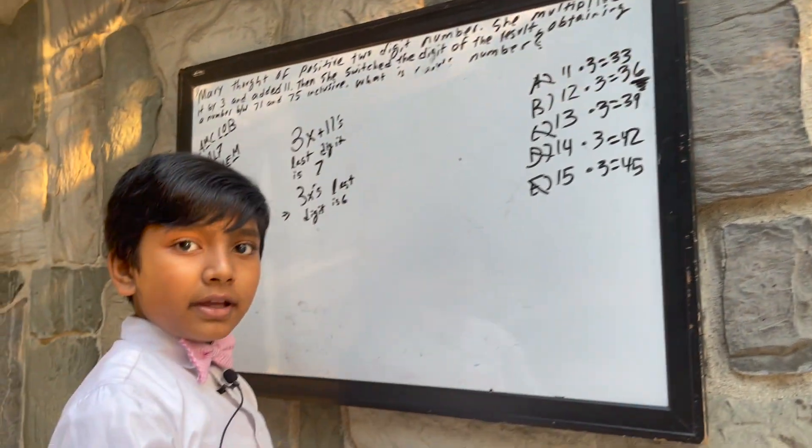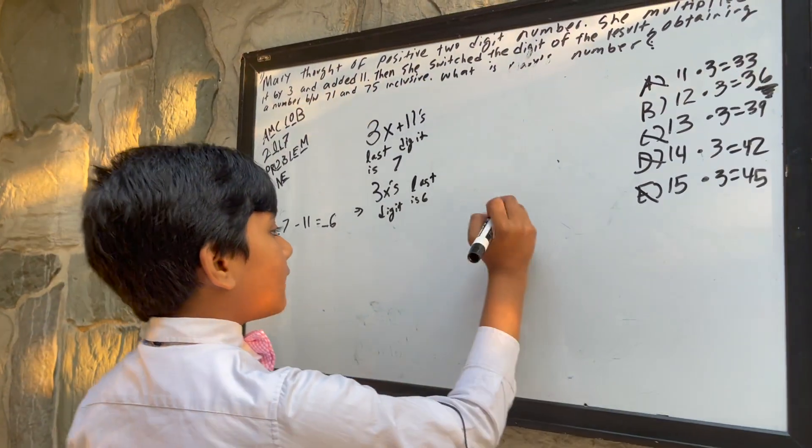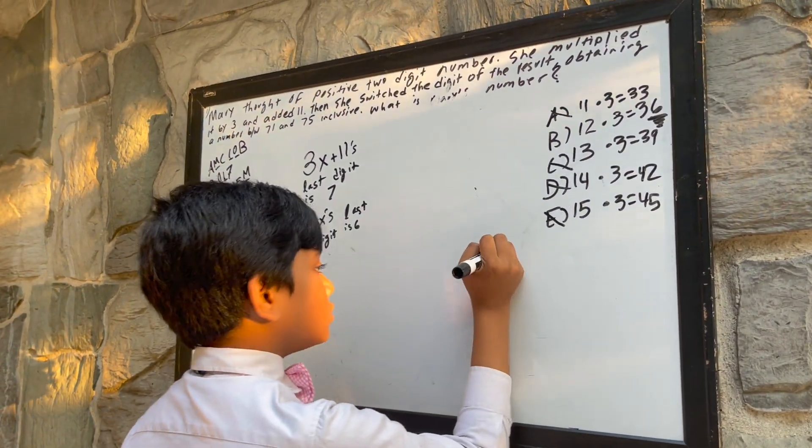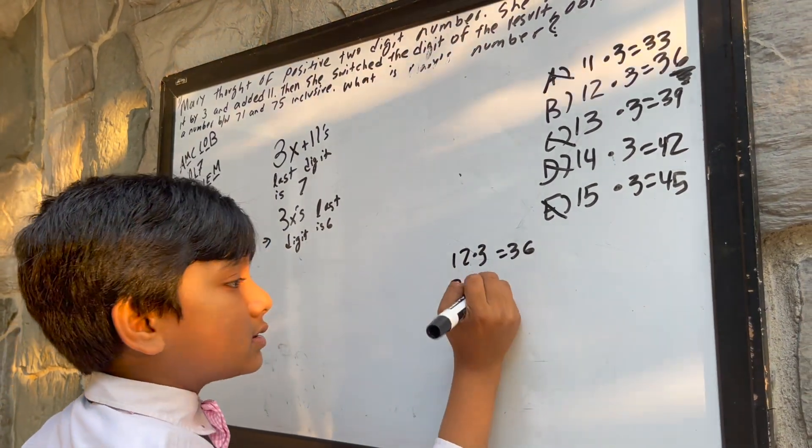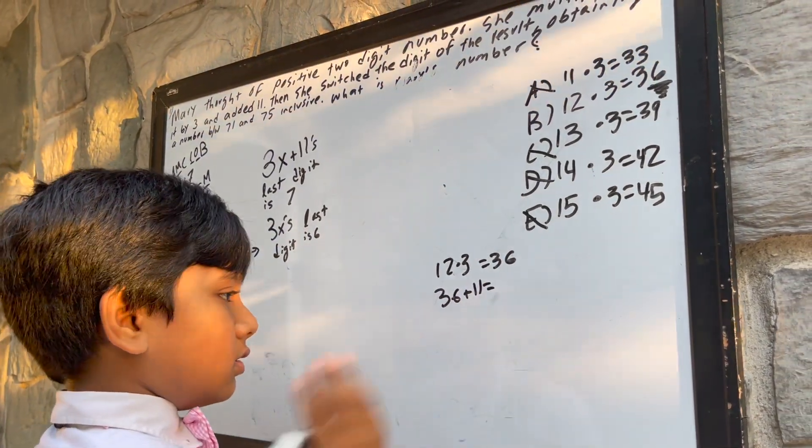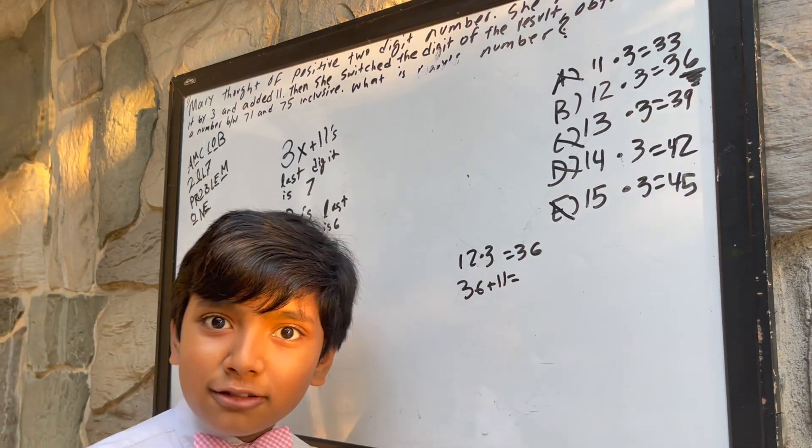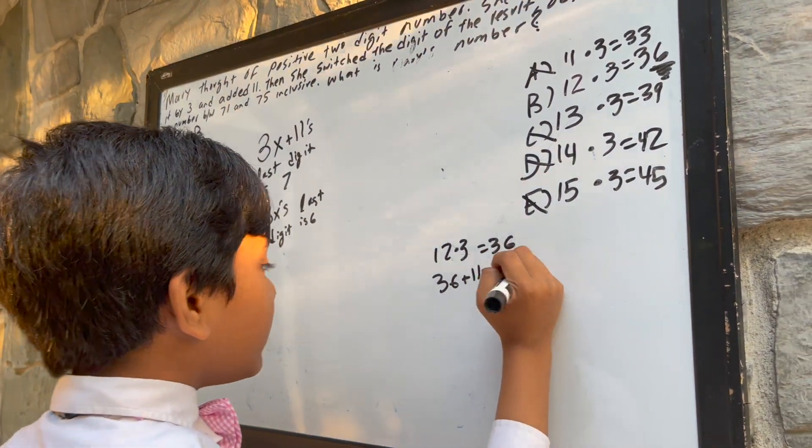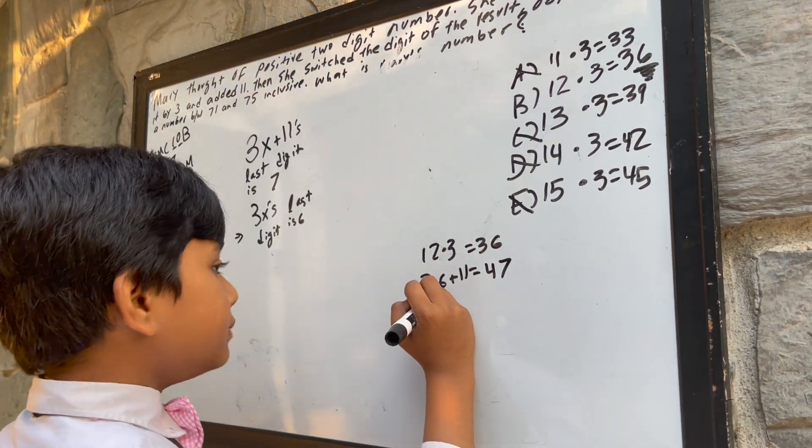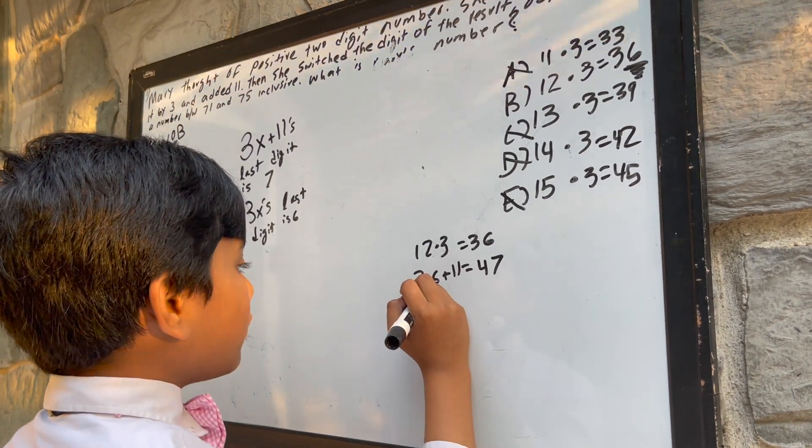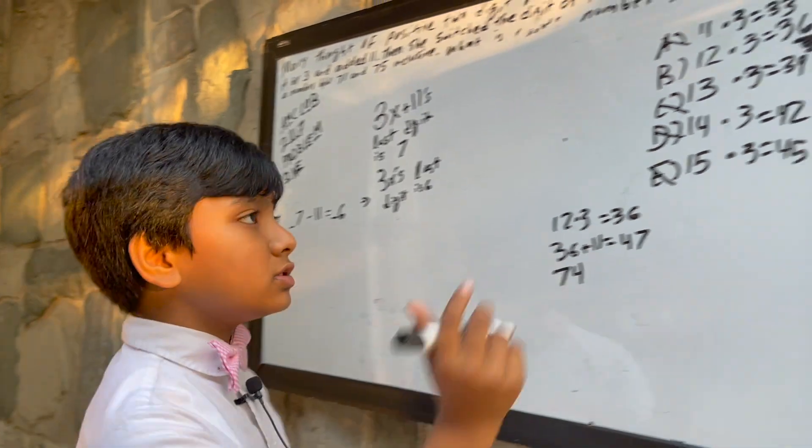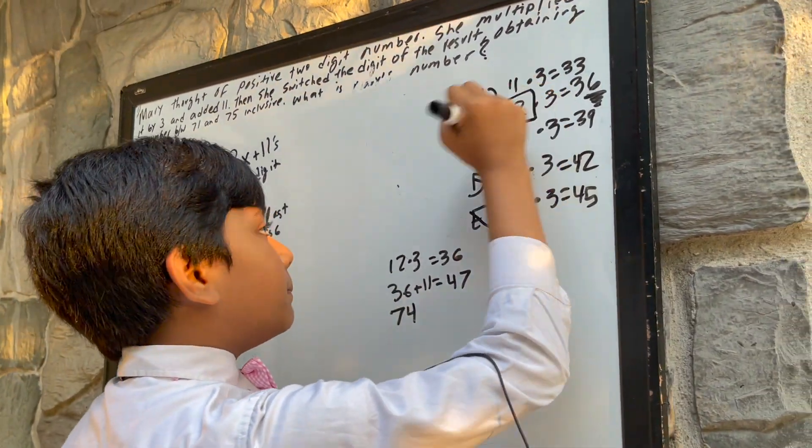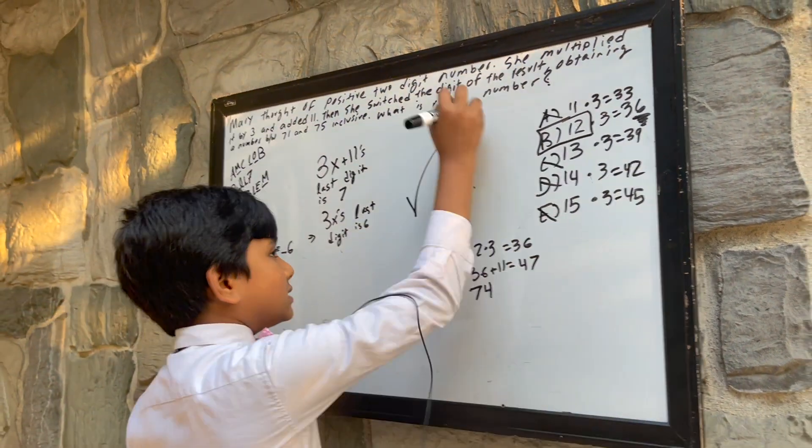And indeed, we can confirm that this does work. Because what is 12 times 3? 36. 36 plus 11 equals 47. And then we have 47 swapped around to give 74. So that means B, 12, must be the answer.